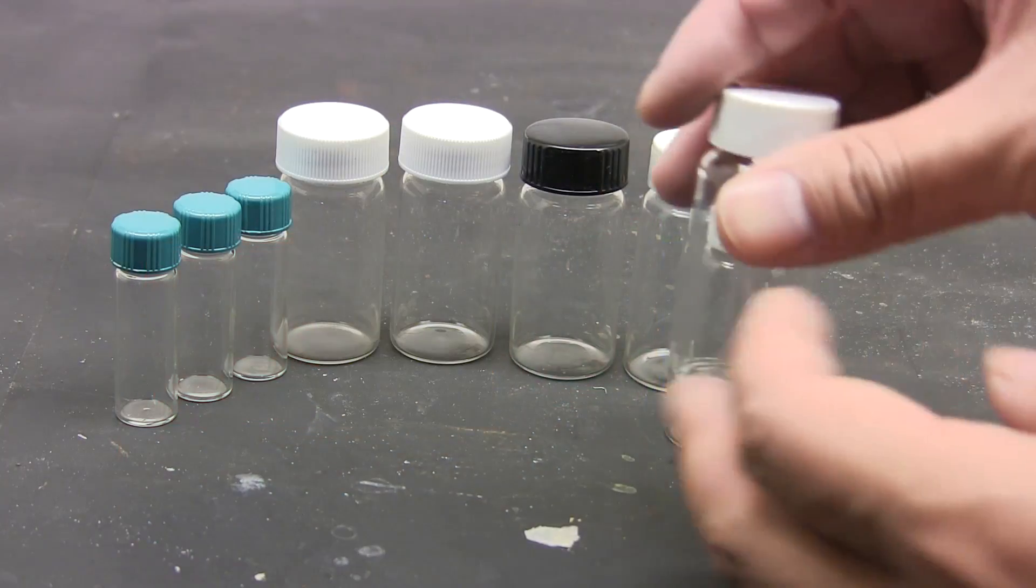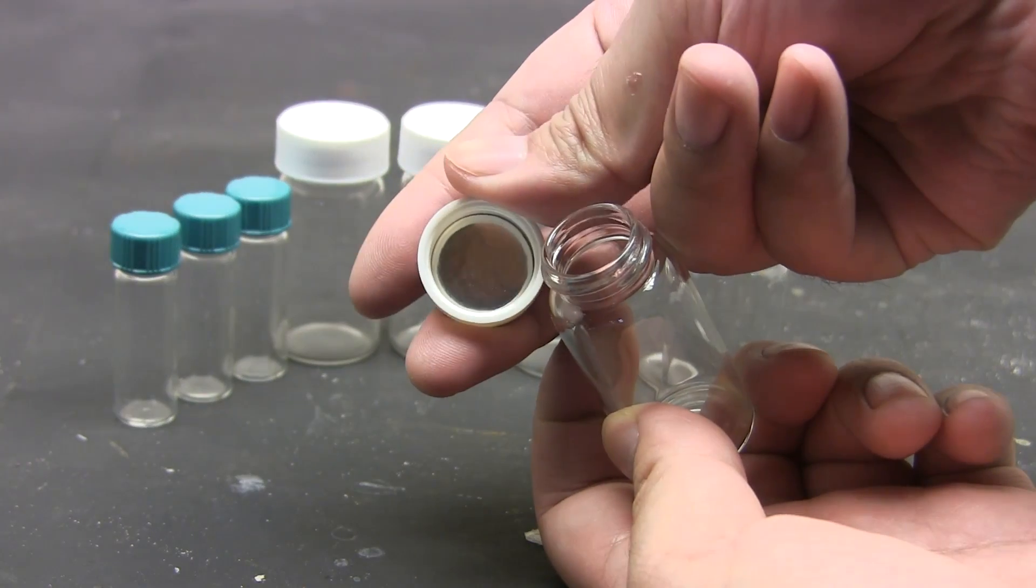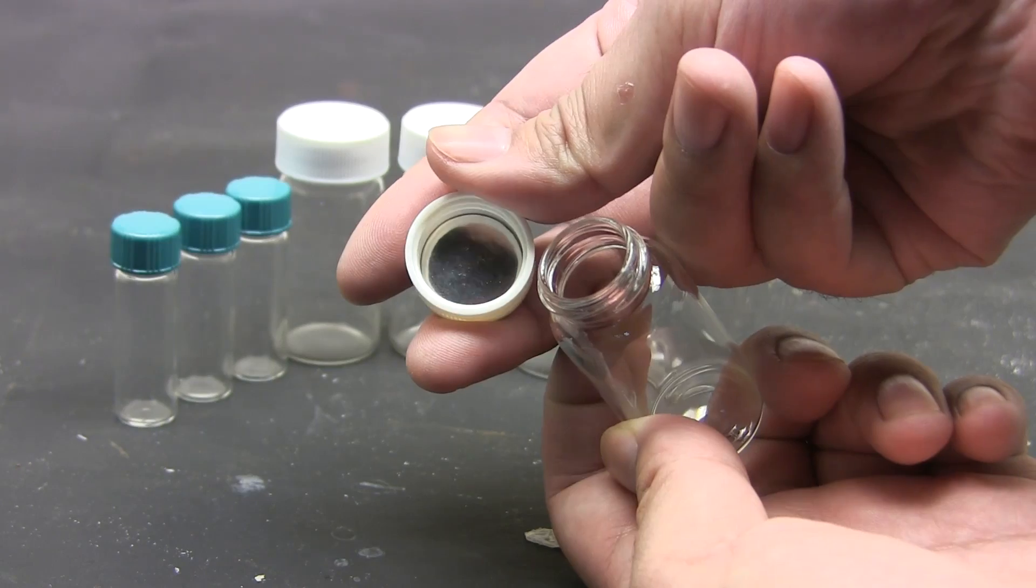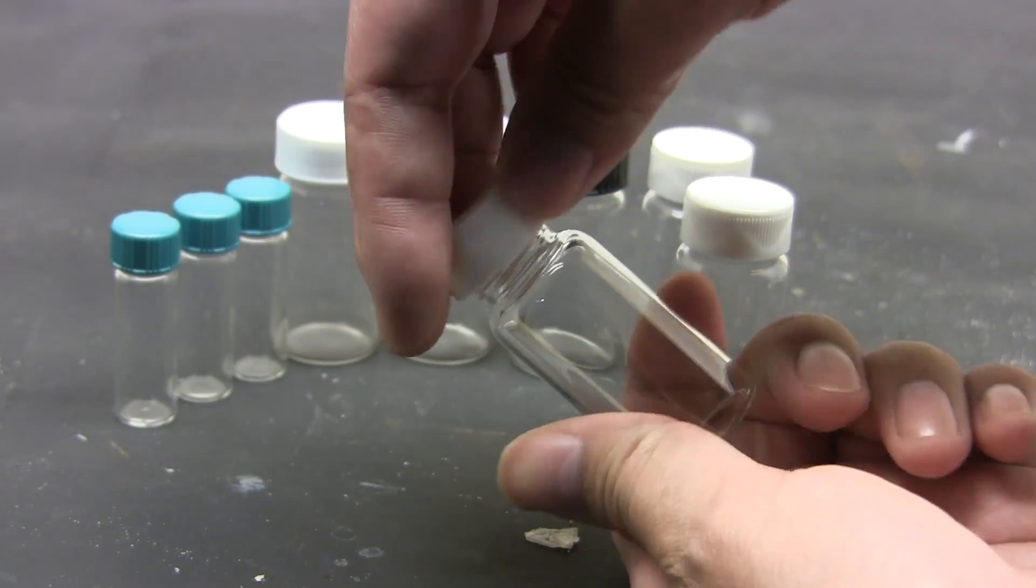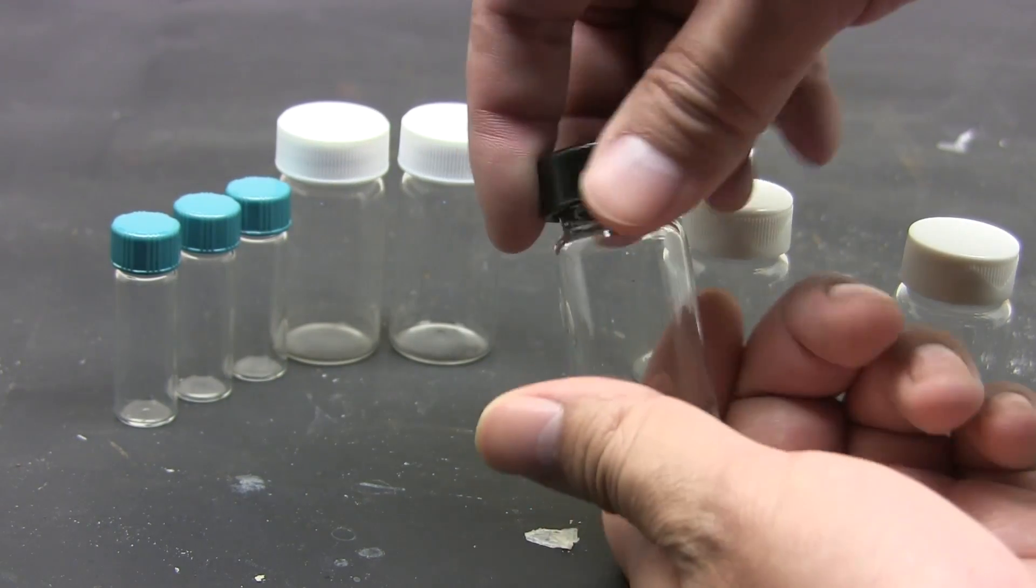When buying vials pay attention to their caps. Foil caps are good for non-reactive solids but will be destroyed by a reactive substance or strong bases, and they're not liquid proof. For liquids and more reactive substances like acids, plastic liners are preferred.